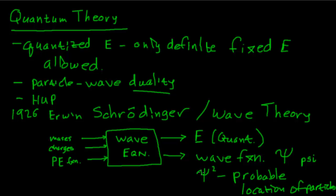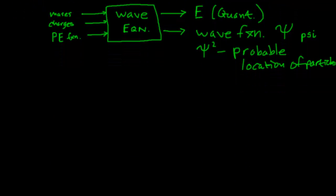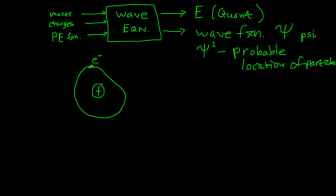We get out quantized energies and information about where we're likely to find our electrons. Back in Bohr's model, we had a planetary or solar system model: a massive proton in the nucleus, and a light electron orbiting around it. Bohr would say the electron is somewhere on that ring. De Broglie would say we can imagine the electron as a wave spread out over the whole ring. Now the wave function from quantum mechanics tells us the probability of finding the electron in any little box drawn anywhere in space.